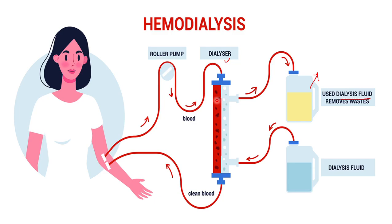This membrane separates the dialyzer into two components — one side is shown in blue color and the other side in red color. On the blue-color side, there are attached two bottles containing dialysis fluid. There is fresh dialysis fluid in one bottle, and this dialysis fluid will enter into the dialyzer through an opening. At the same time, the doctor makes a small cut on the arm of the person, attaches a tube, and the other end of the tube is attached to the dialyzer. This tube sucks the blood and transfers it into the other portion of the dialyzer. So one portion of the dialyzer contains blood and the other portion contains dialysis fluid.